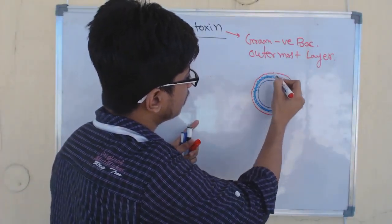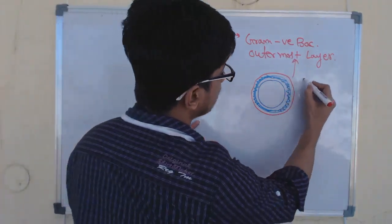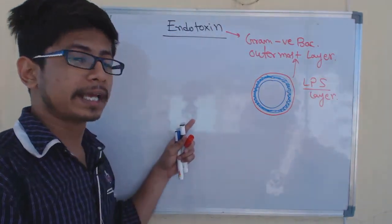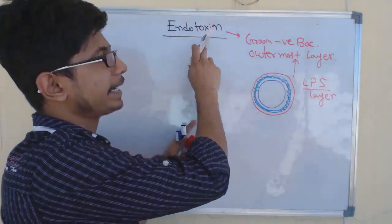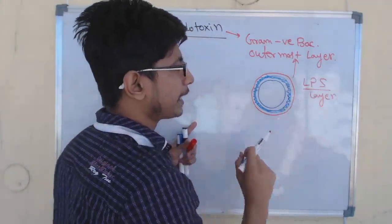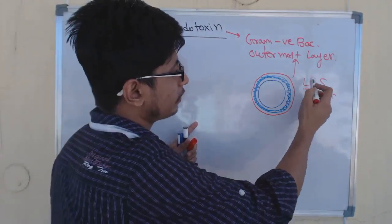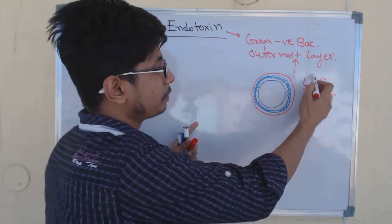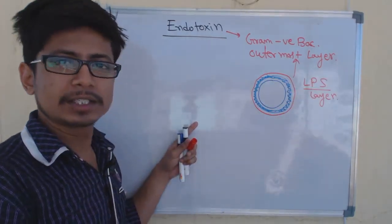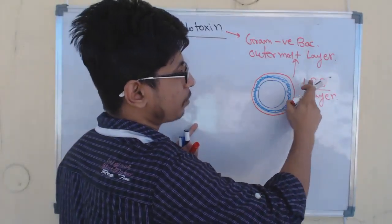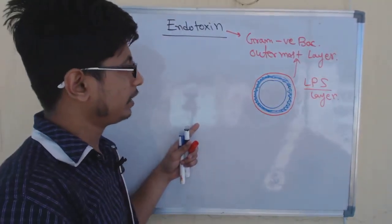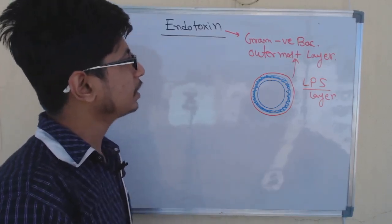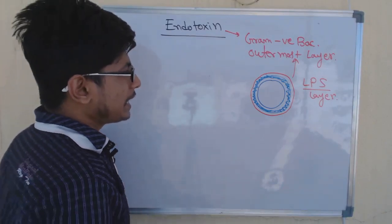This is known as lipopolysaccharide or LPS layer. Lipopolysaccharide—this LPS layer is known as endotoxin. Lipopolysaccharide means this whole thing is a cell membrane, so obviously it contains lipid, but lipid is attached with polysaccharides, that is sugar moieties. So the lipid is attached with polysaccharides or multiple sugar chains—that is altogether known as the LPS or endotoxin.